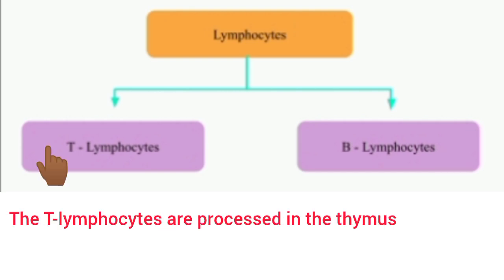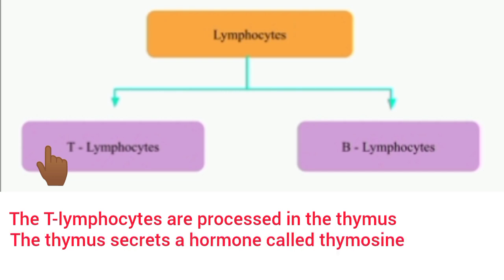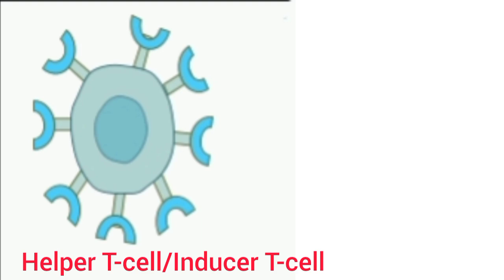The T lymphocytes are processed in the thymus, mostly during the period just before birth and a few months after birth. The thymus secretes a hormone called thymosin, which plays an important role in immunity. It accelerates the proliferation and activation of lymphocytes in the thymus and increases the activity of lymphocytes in lymphoid tissues. During processing, T lymphocytes are transformed into four types: helper T cells or inducer T cells, also called CD4 cells, because of CD4 molecules on their surface.